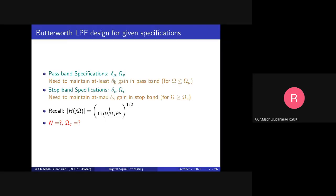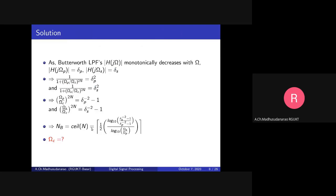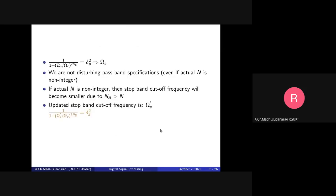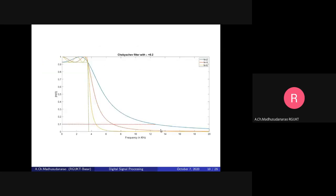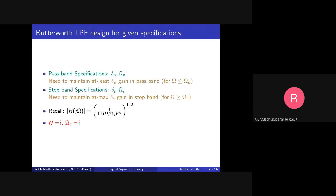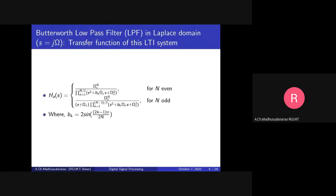With the help of these specifications we will try to find the values of n and omega_c using the relevant expressions. Once we have the n value and omega_c, we can obtain the analog transfer function.